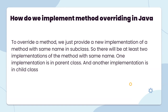How do we implement method overriding in Java? To override a method, we just provide a new implementation of a method with the same name in a subclass. So there will be at least two implementations of the method with the same name — one implementation in the parent class and another in the child class. The same method name, return type, and arguments are used.